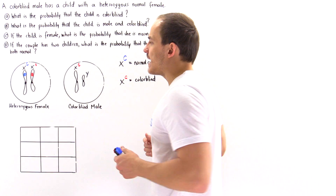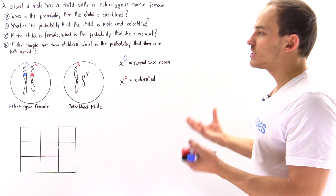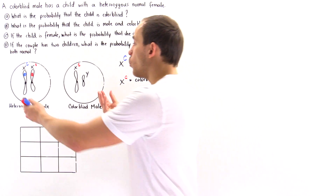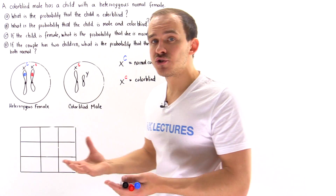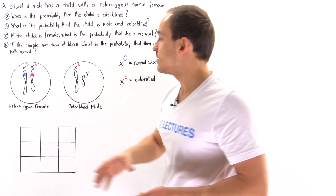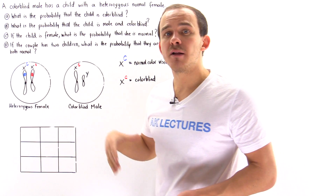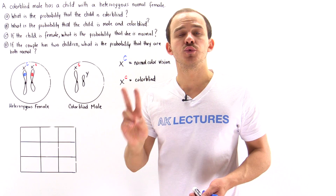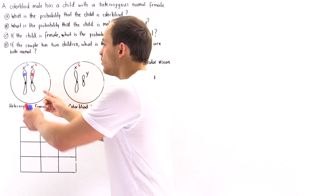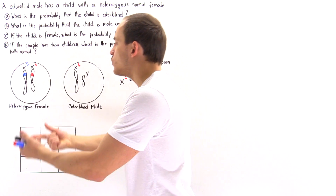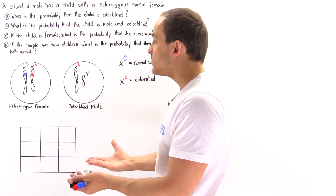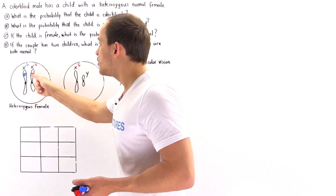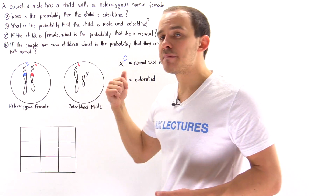Now we know the genotypes of both individuals. Let's carry out the mating process. Before they mate, each produces sex cells. The heterozygous normal female produces two types of egg cells, and the colorblind male produces two types of sperm cells. Replication takes place, then meiosis, and at the end we produce two types of egg cells.